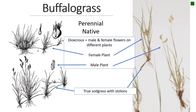Buffalo grass is the other signature grass of the short grass prairie. It also forms a sod, but with stolons. This plant is also unique because it has male and female flowers on separate plants — that's called dioecious. The male flowers look a bit like blue grama — kind of an eyebrow-like seed head — while the female flowers are right at the base, down in the leaves, forming a nut-like structure.